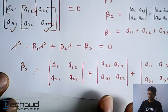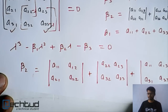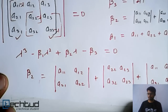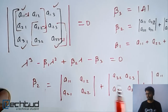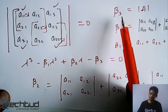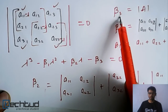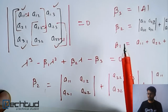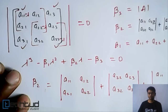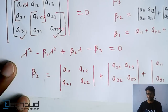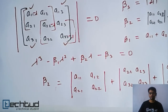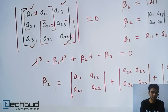You can directly plug these values in and calculate lambda without having to expand the full determinant each time. So to recap: beta3 is the determinant of the matrix, beta2 is the sum of the three principal 2×2 minors, and beta1 is the trace of the matrix. Using these, you can directly solve for the Eigenvalues.